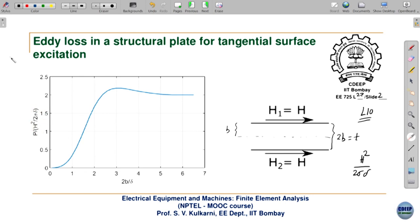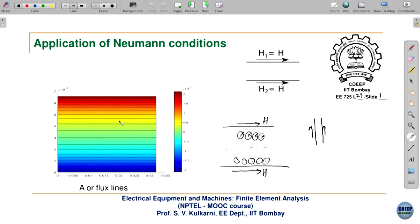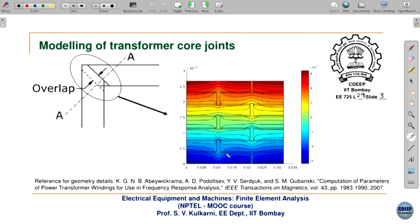Now let us analyze a more complicated case: the transformer core joint. This is a vertical limb of a transformer and a horizontal yoke, with a mitered joint between them. There could also be a step-lap joint, but since it is one step, this is a mitered joint. Taking a cross-section through this joint gives the geometry shown.